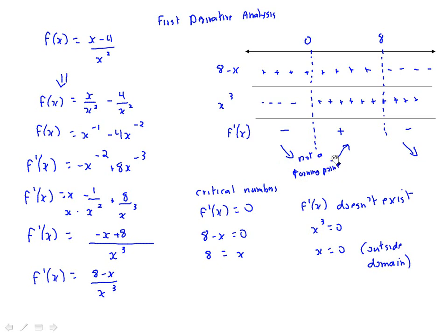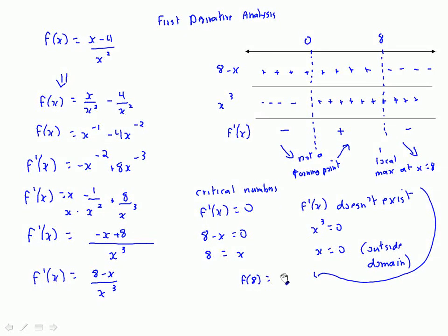However, the direction does change from left of zero to the right of zero. There is a local maximum at x = 8. Computing f(8) = (8 - 4)/8² = 4/64 = 1/16. So there is a maximum value at (8, 1/16).